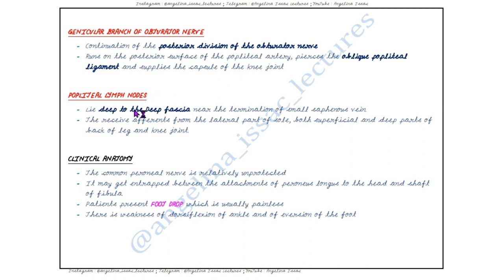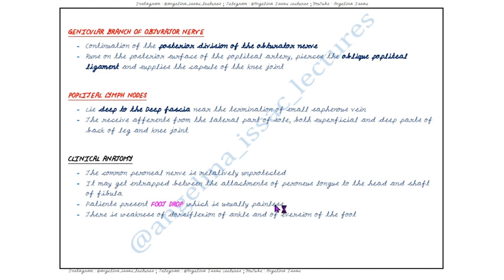The popliteal lymph nodes lie deep to the deep fascia near the termination of the small saphenous vein. They receive afferents from the lateral part of the sole, both superficial and deep parts of the back of the leg, and the knee joint. Regarding the clinical anatomy of the popliteal fossa: the common peroneal nerve is relatively unprotected and may get entrapped between the attachments of the peroneus longus to the head and shaft of the fibula. The patient presents with foot drop, which is usually painless, along with weakness of dorsiflexion of the ankle and eversion of the foot.